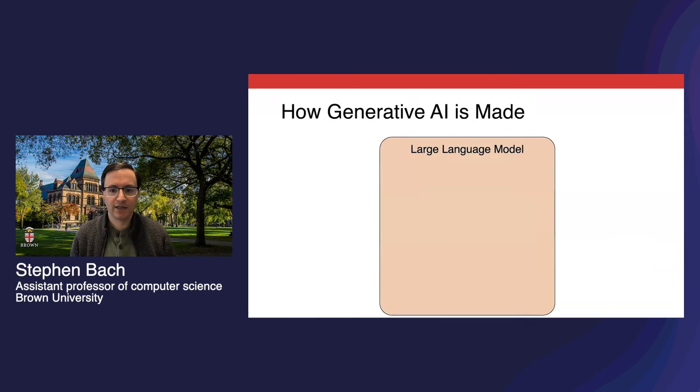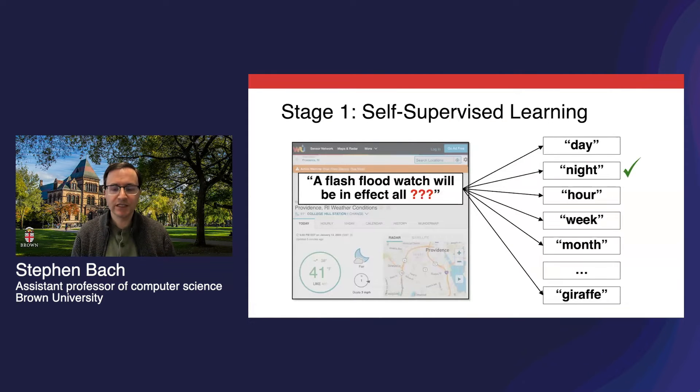The first thing to know about training LLMs is that it's not one monolithic process. It's a whole stack of training processes. The first stage is self-supervised learning. This stage is what people traditionally think of when we use the term language modeling.